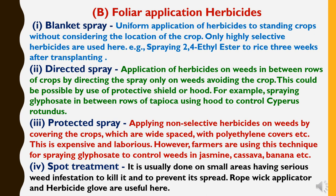The third method is protected spray — applying non-selective herbicides on weeds by covering wide-spaced crops with polyethylene covers. This is expensive and laborious. However, farmers use this technique for spraying glyphosate to control weeds in jasmine, cassava, banana, and other crops. The fourth method is spot treatment — usually done on small areas having serious weed infestation to kill it and prevent its spread. Ropevick applicators and herbicide gloves are useful here.